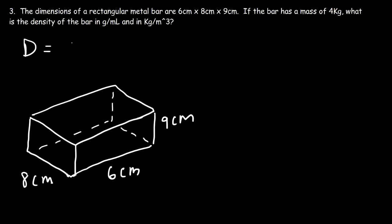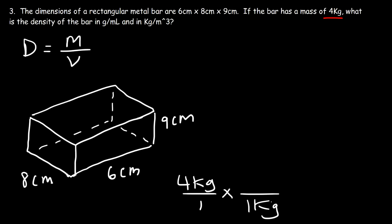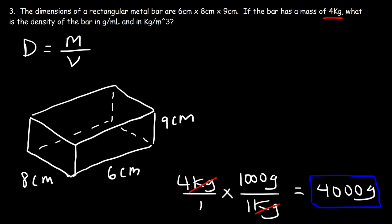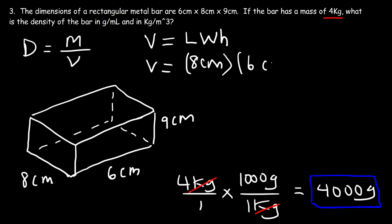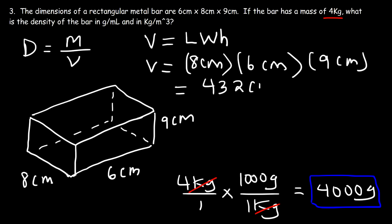Density is equal to mass divided by volume. We already have the mass in kilograms, so we need to convert that to grams. Starting with 4 kilograms — since 1 kilogram equals 1,000 grams — we get a mass of 4,000 grams. Now we need to calculate the volume in milliliters. The volume of a rectangular box is length times width times height: 8 centimeters times 6 centimeters times 9 centimeters. 8 times 6 is 48, and 48 times 9 is 432, so this is 432 cubic centimeters.